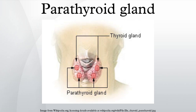The position of the glands reverses during embryological life. The pair of glands which is ultimately inferior develops from the third pouch, whereas the pair of glands which is ultimately superior develops from the fourth pouch. During embryological development, the third pouch migrates downwards, dragging the inferior glands with it. The superior pair are not dragged downwards by the fourth pouch to the same degree. The glands are named after their final, not embryological, positions.